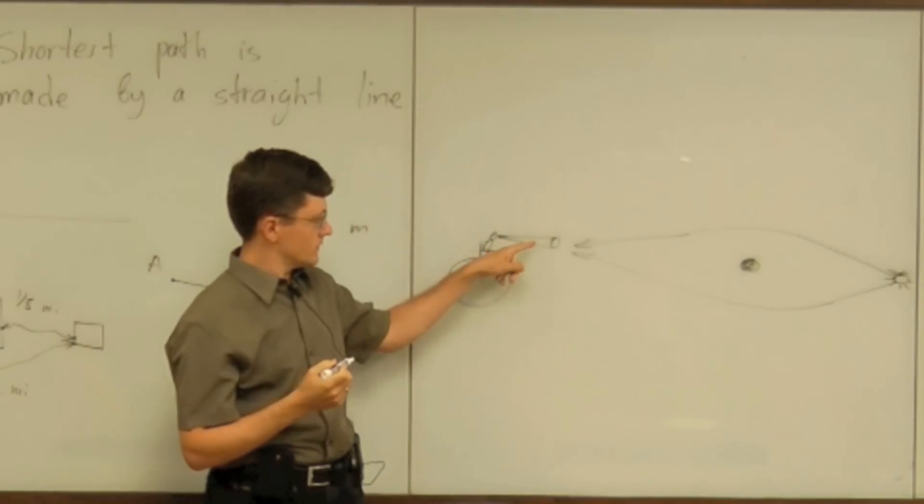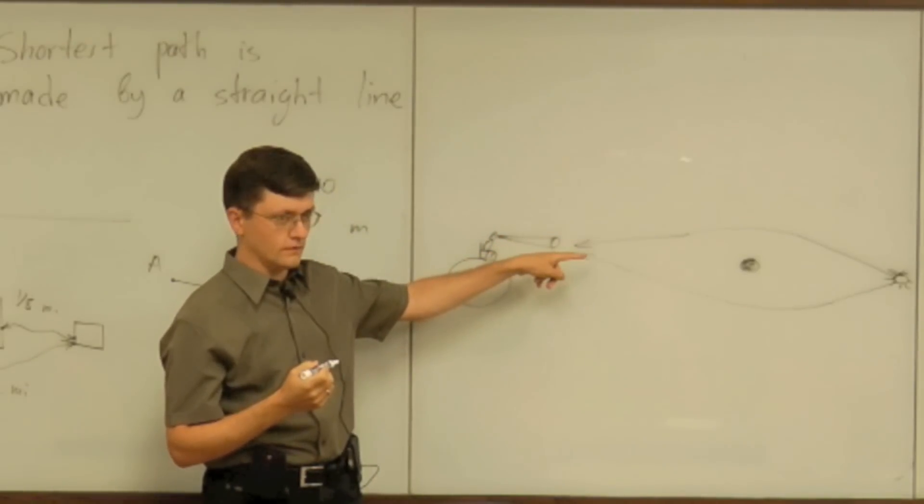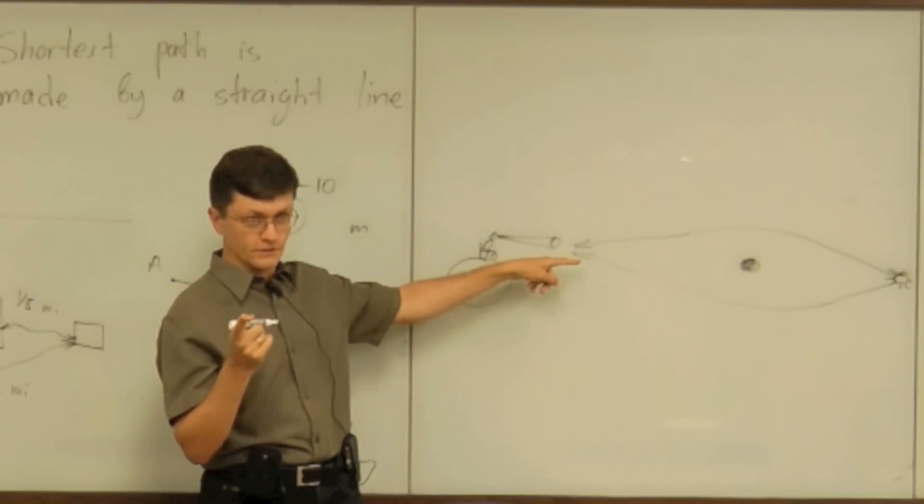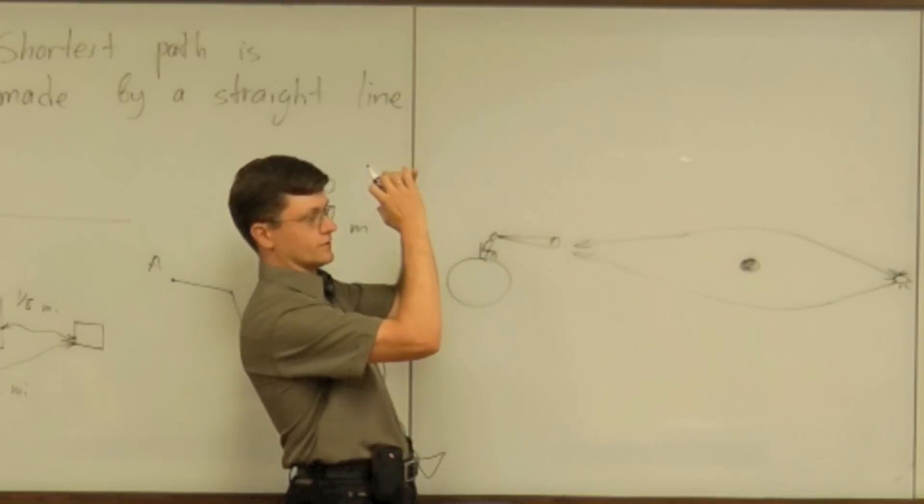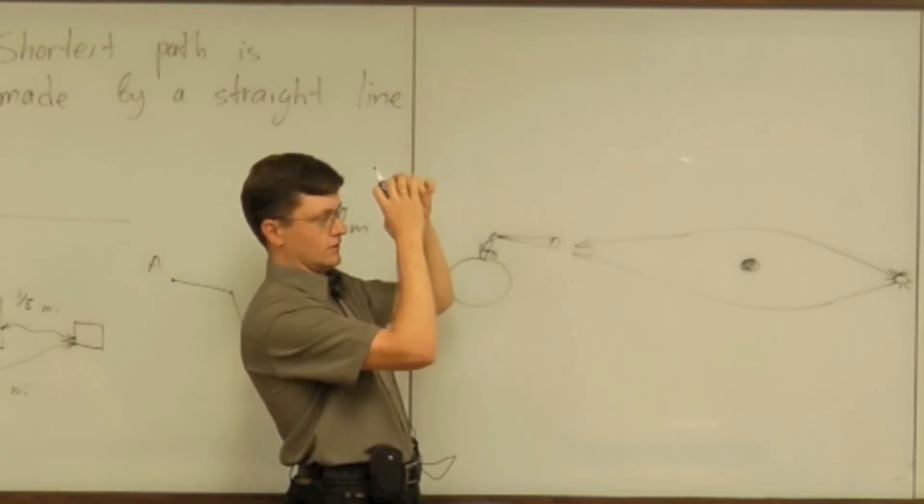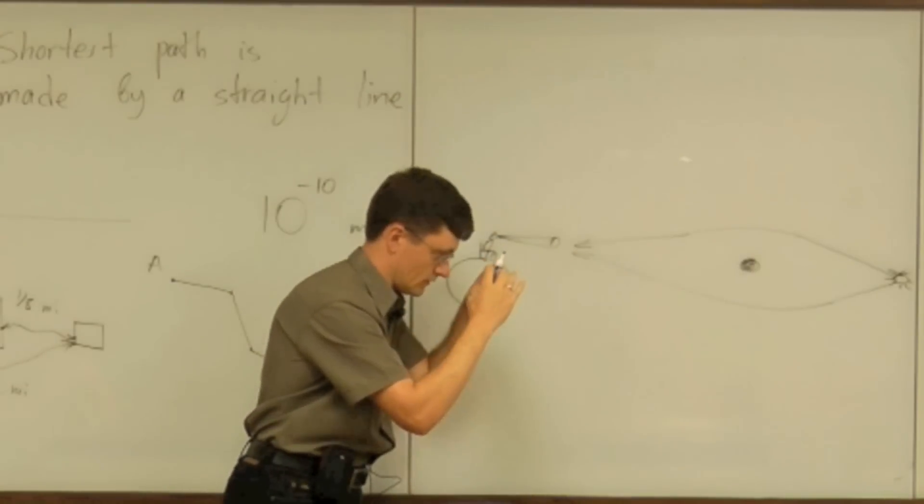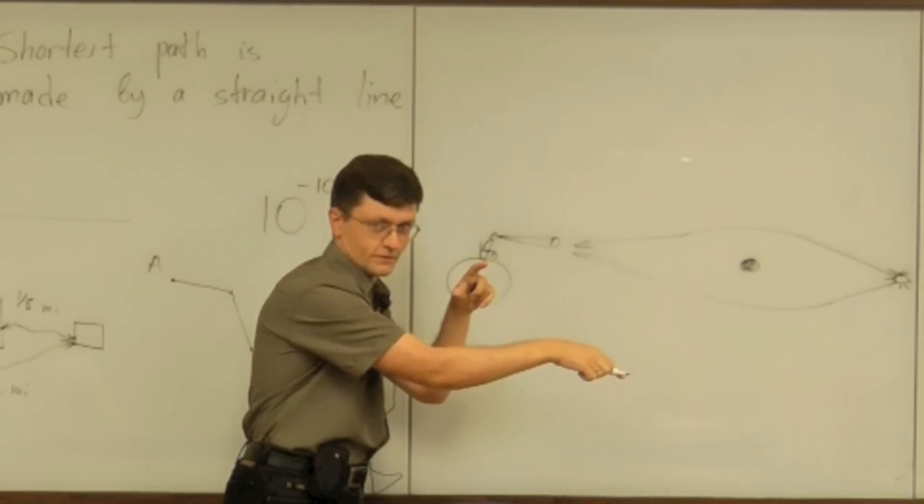And now what does he see? He sees two stars. Because if he looks in that direction, like this, he sees a star. And if he looks in that direction, he sees another star.